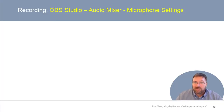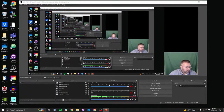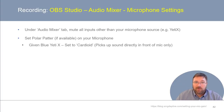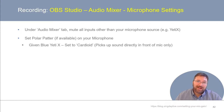Next, we want to check our audio mixer and make sure that our microphone settings look good. Under the audio mixer tab, take a moment to make sure that all audio inputs other than your target microphone are muted. In my case, the only thing I want to capture is my Yeti X. Also, if your microphone has different polar pattern options, as I have on my Yeti X, set that polar pattern to cardioid. This is just going to pick up sound from directly in front of the microphone, helping to reduce some of the background noise.